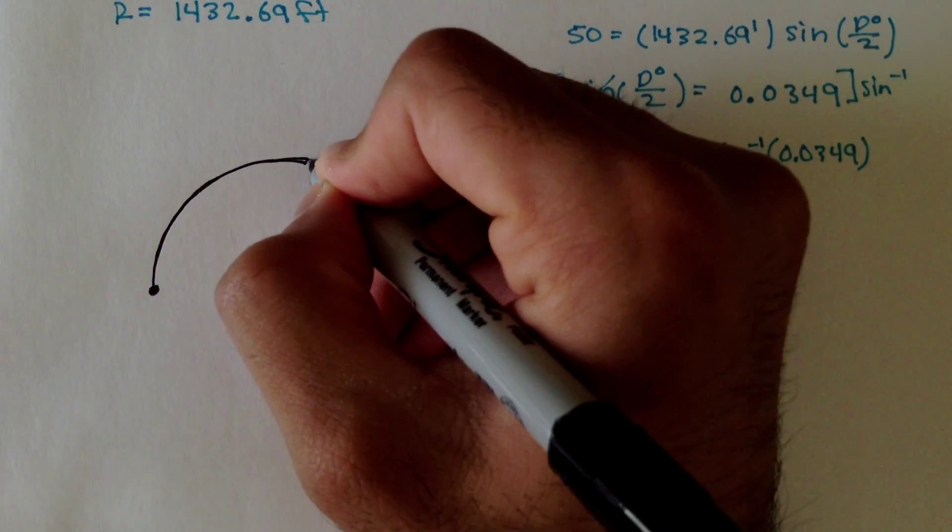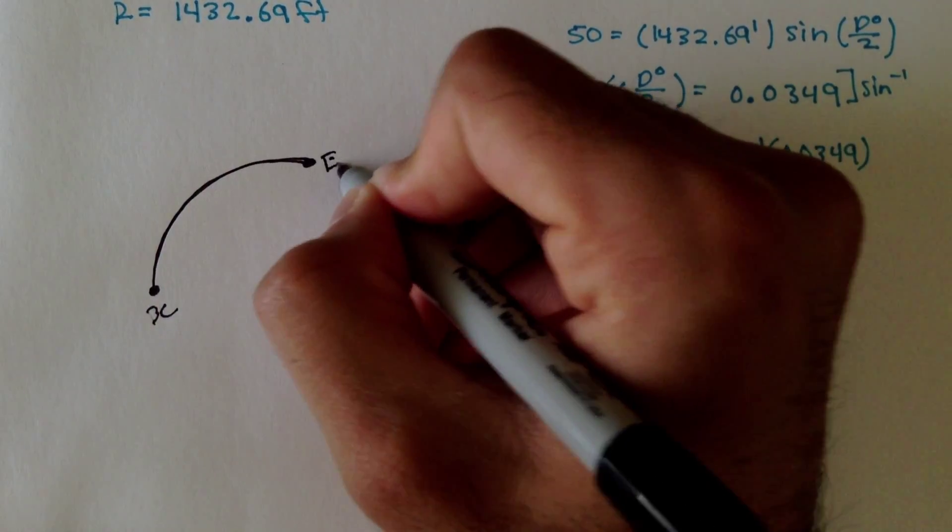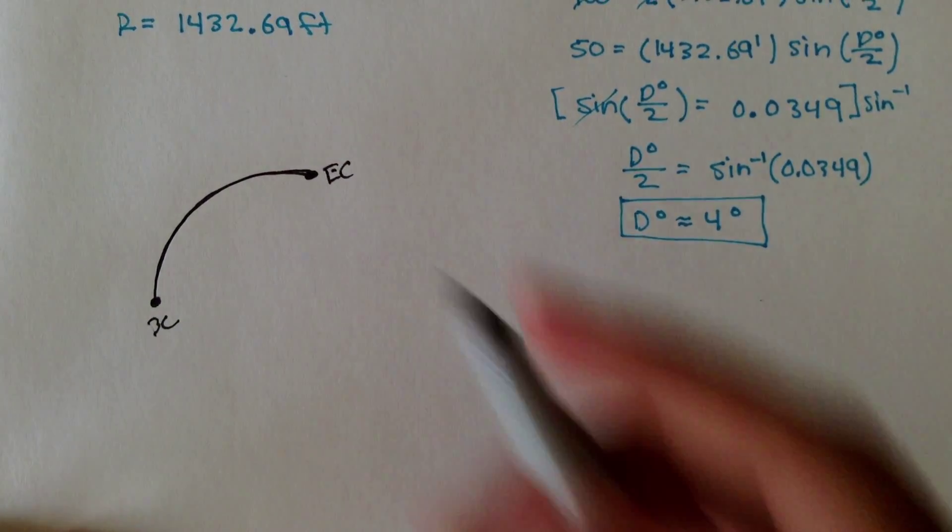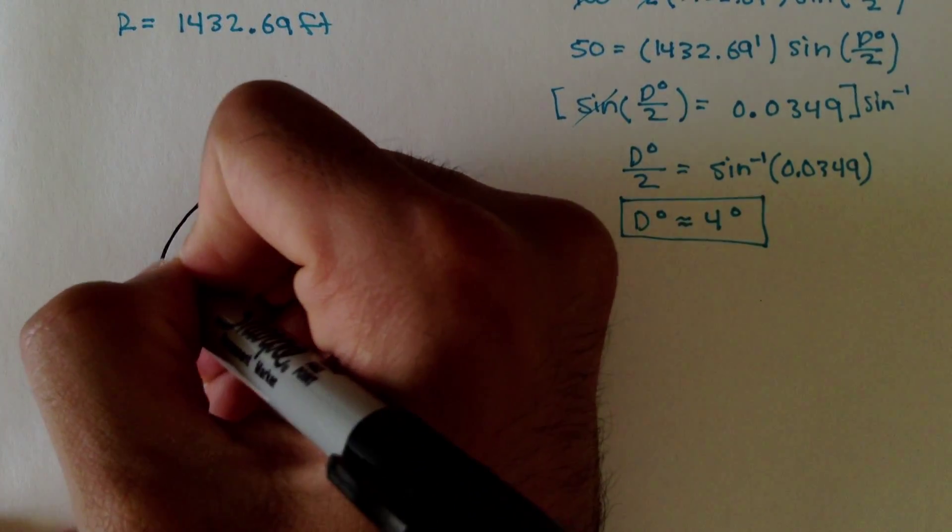And the BC is here, the EC is here. This is the BC, this is the EC. We want to figure out where the point of intersection is located, and remember, the point of intersection is where the two tangents for the BC and the EC intersect.